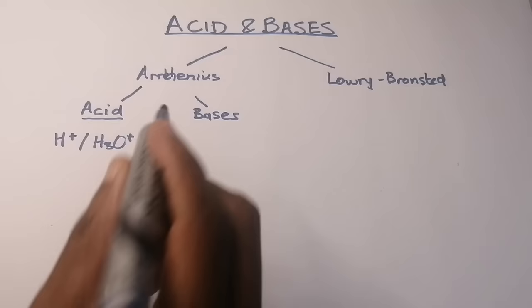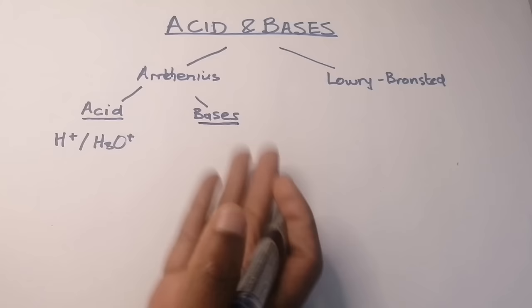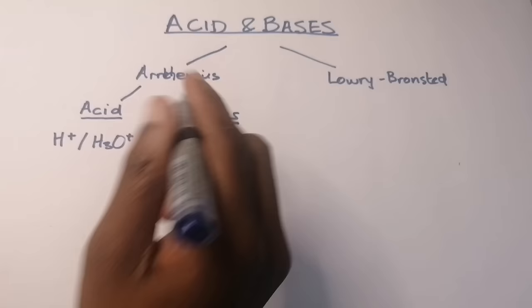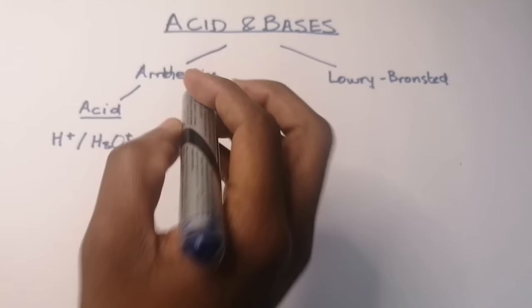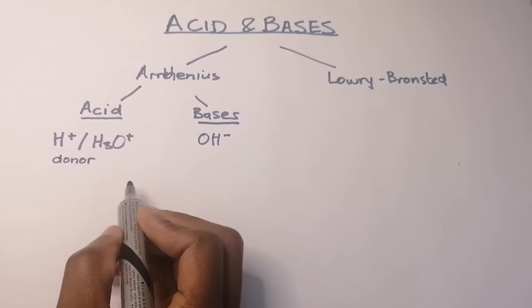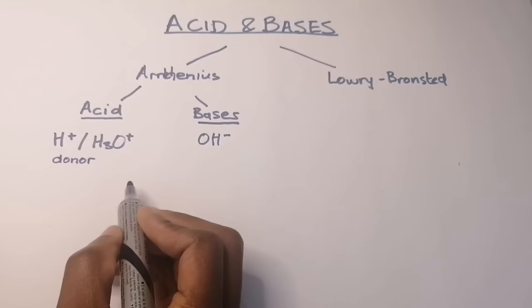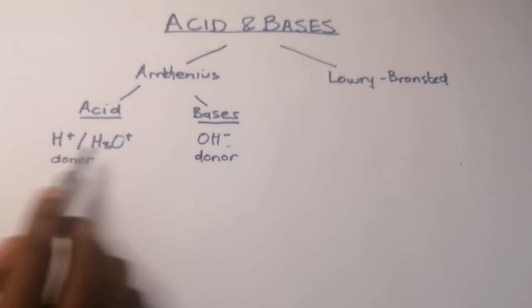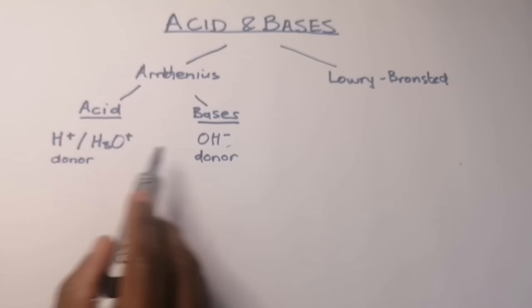When we look at the base, Arrhenius said a base is a substance that dissociates in water or in solution to give us hydroxide ions (OH⁻). You can look at an acid as a substance that donates hydronium ions (H₃O⁺) and a base as a substance that donates hydroxide (OH⁻). Those are the substances we refer to when talking about acids and bases.